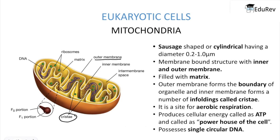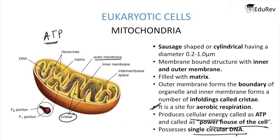Mitochondria is the site for aerobic respiration — it produces cellular energy in the form of ATP, that is adenosine triphosphate, which is required for the proper functioning of a cell. For this reason, mitochondria is called the powerhouse of the cell. It also possesses a single circular DNA, which is why mitochondria is called a semi-autonomous organelle — it has its own DNA apart from the nucleus.